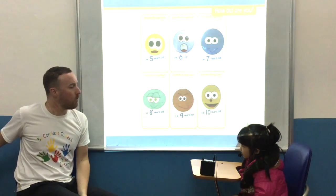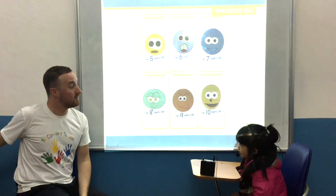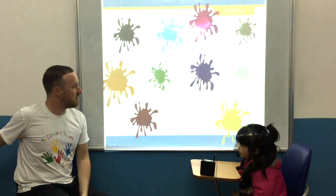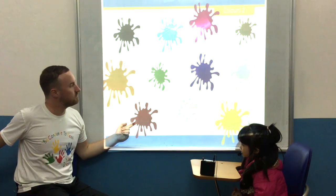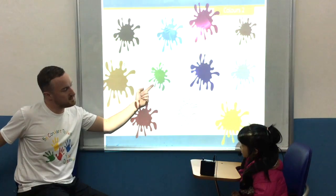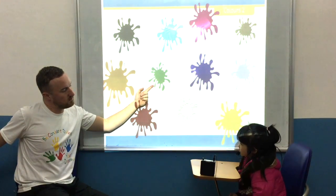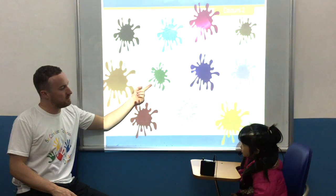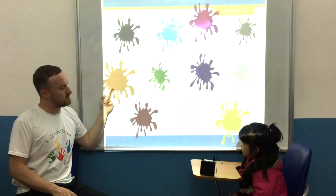How old are you? What colour is this? It's grey. What colour is this? Green. It's grey. It's orange.